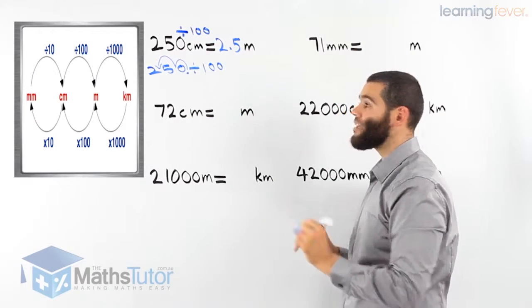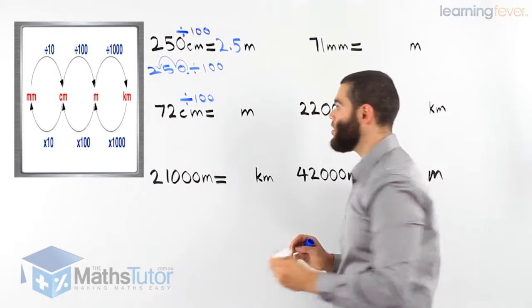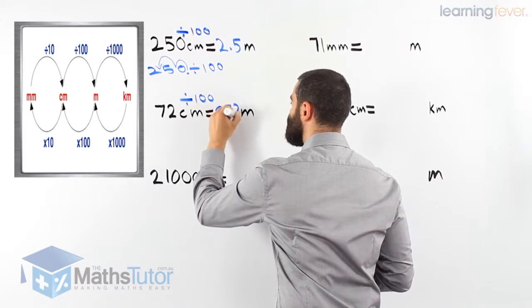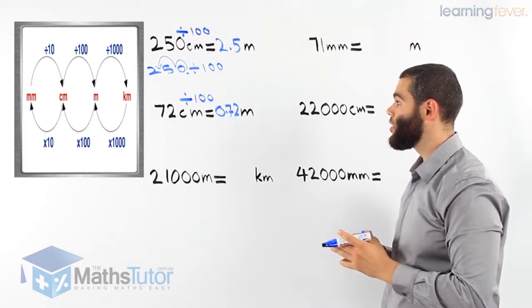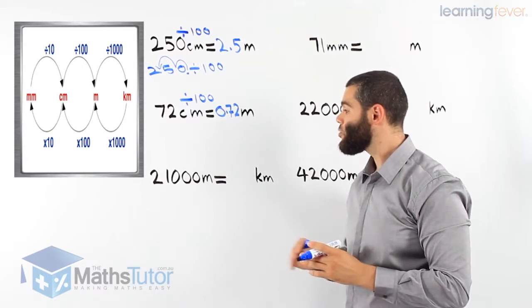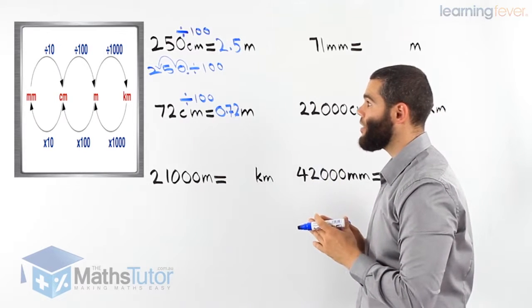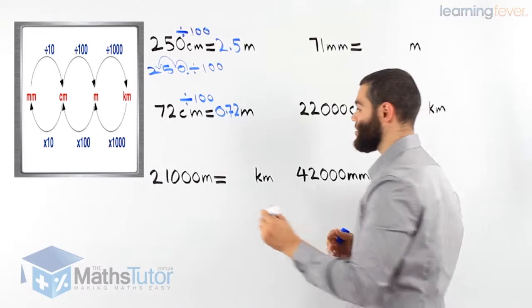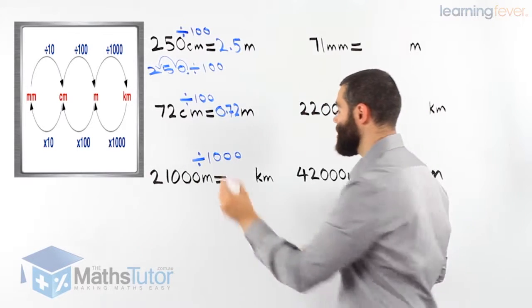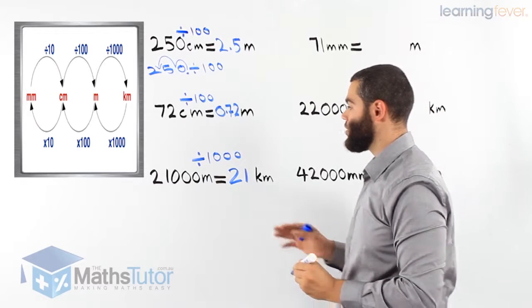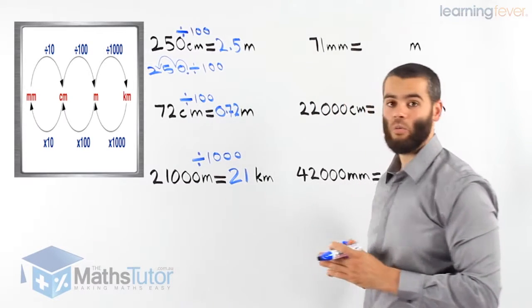From centimetres to metres again, same process — we're dividing by 100. So 72 divided by 100 gives you 0.72 metres. Then, 21,000 metres — we're going to kilometres. From metres to kilometres we divide by 1000. So 21,000 divided by 1000 is 21 kilometres. That means 21,000 metres is exactly the same as 21 kilometres.